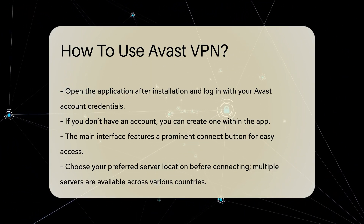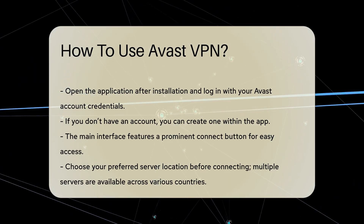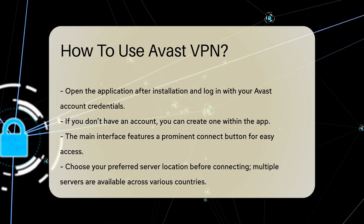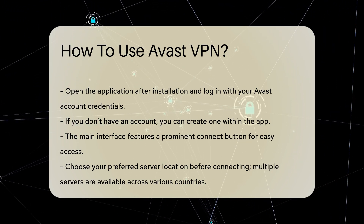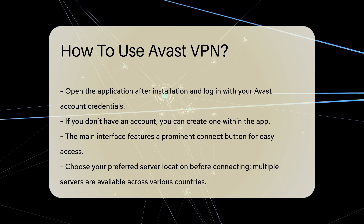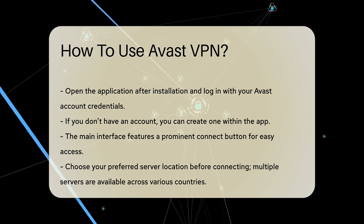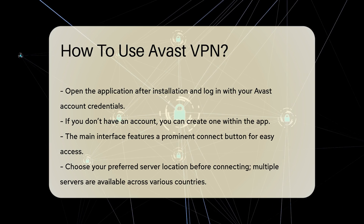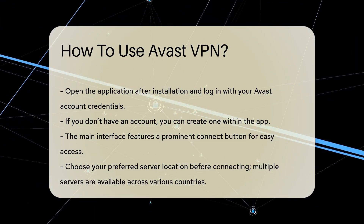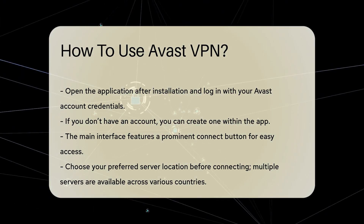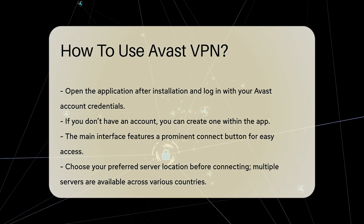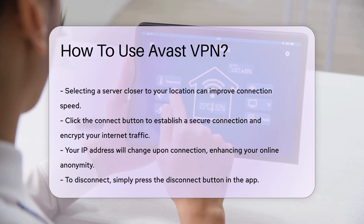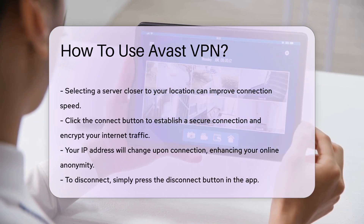After logging in, you will see the main interface, which displays a large connect button. Before connecting, choose your preferred server location. Avast VPN has multiple servers across various countries. Selecting a server closer to your geographical location can enhance your connection speed. When you are ready, click the connect button.